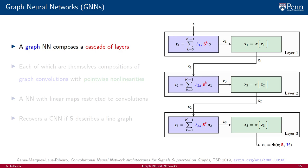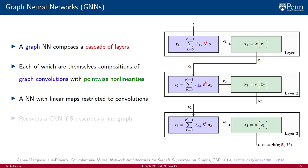A graph neural network is the composition of a cascade of layers, each of which is itself a composition of a graph convolution with a pointwise nonlinearity. The graph convolution is a polynomial on a matrix representation of a given graph. We can therefore think of a GNN as a neural network in which the linear transformations at each layer are restricted to be graph convolutional filters. As per this definition, GNNs are generalizations of CNNs, in the sense that CNNs can be recovered from GNNs by particularizing the graph to a line graph.